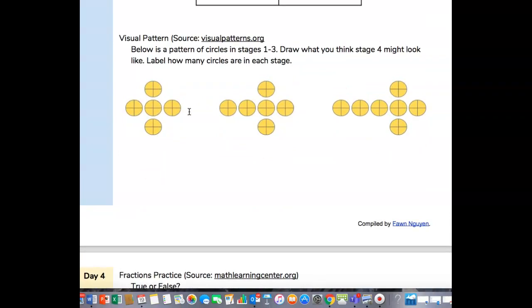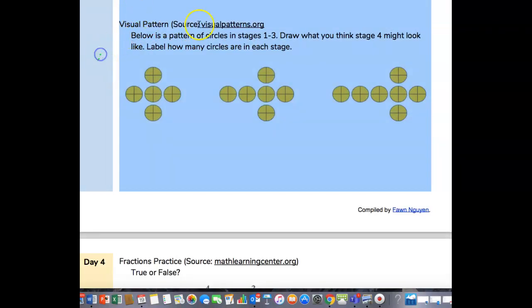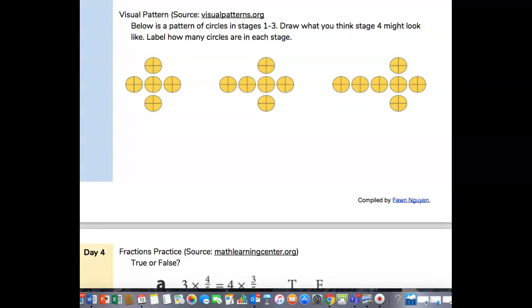Visual pattern. Below is a pattern of circles in stages one through three. We've done a lot of these so far, haven't we? So, this is stage one. This is stage two. And this is stage three.